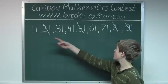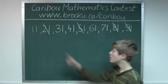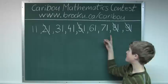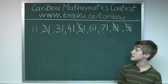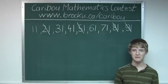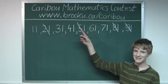The remaining numbers are all prime: that would be one, two, three, four, five. So the answer is five. If you'd like to know more about this contest, please visit our website at www.brocku.ca/caribou.